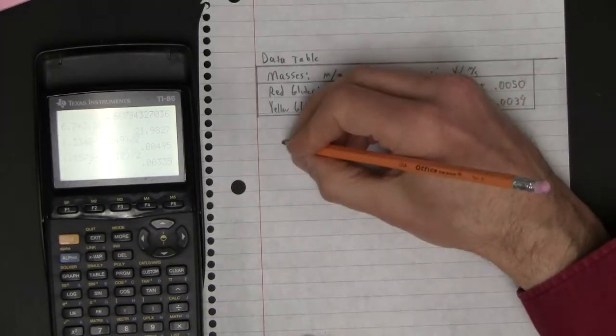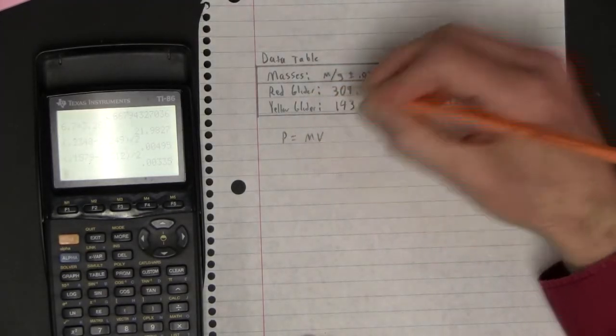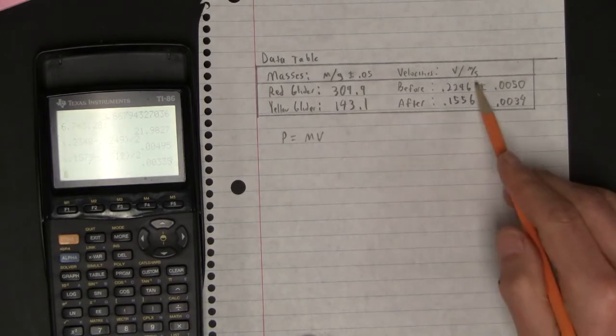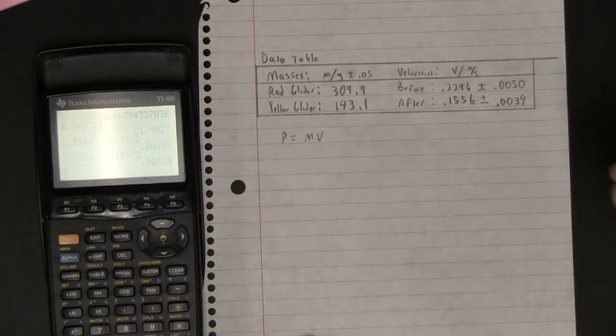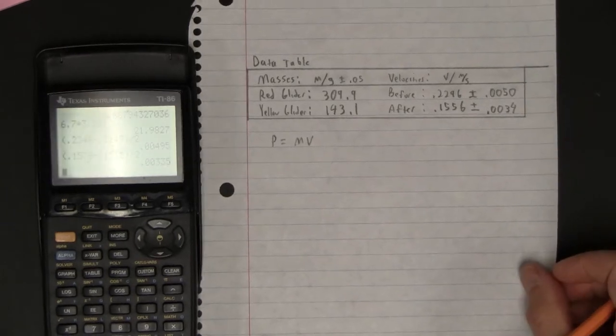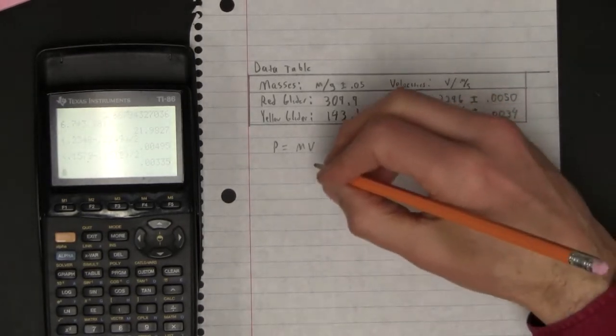So momentum is obviously M times V, and I'm just going to use grams. These are meters per second, so we're going to get momentums in gram meters per second, which are just fine. You just got to tell me what your units are. No fair not telling me.